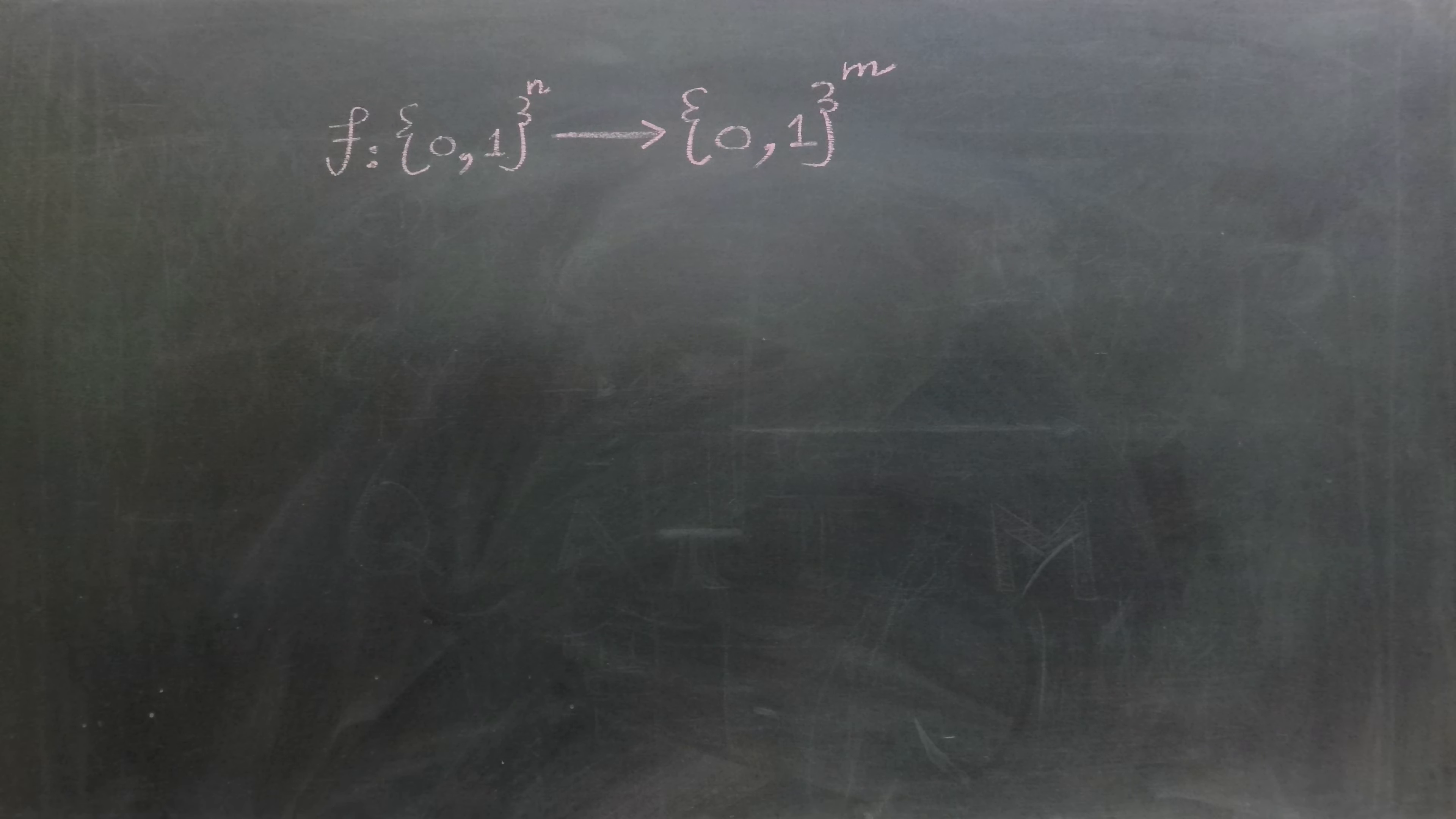We can represent this classical function using a classical circuit labeled as cf depicted in the following block diagram. Essentially, this classical function is equivalent to the classical circuit presented below.